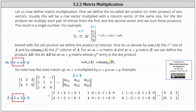It is important to recognize how the sizes match up when multiplying two matrices. The number of columns in the first matrix must equal the number of rows in the second matrix in order for the product to be defined, and the outer dimensions give us the dimensions of the product.